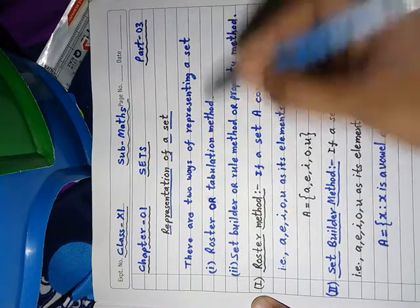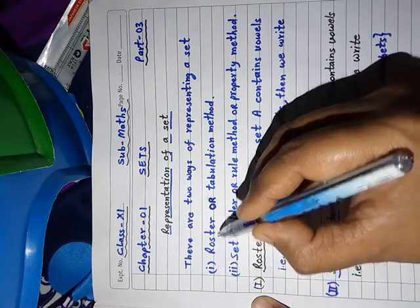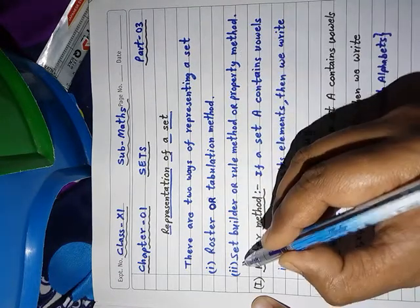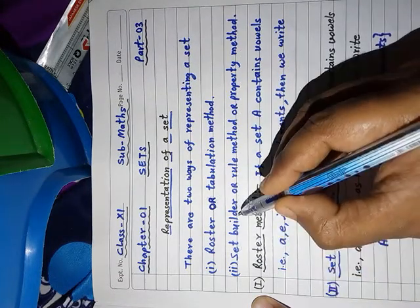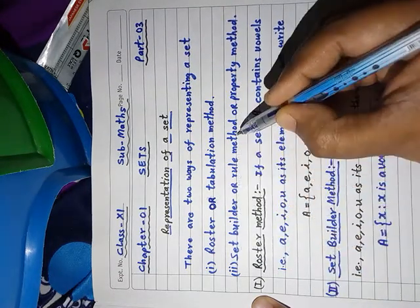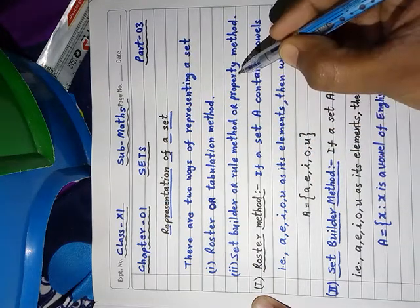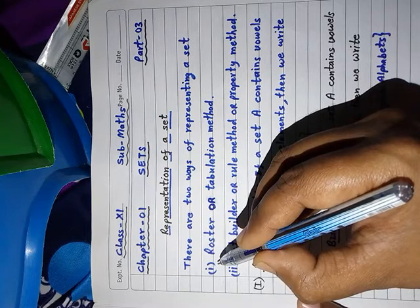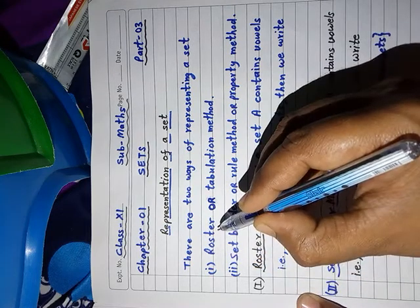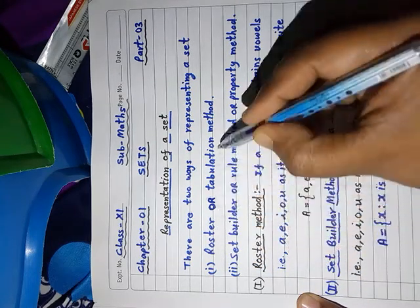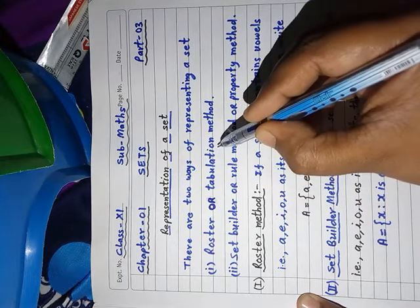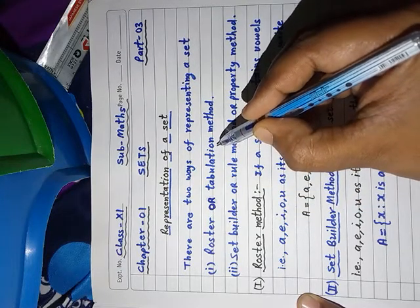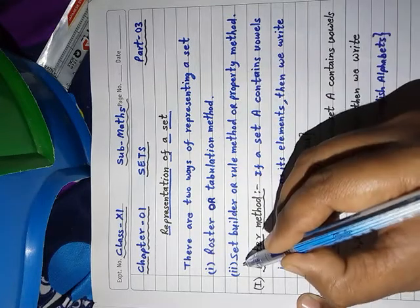First is roster or tabulation method, and second is set builder or rule method or property method. In the first representation method, roster or tabulation, elements are given in tabular form.